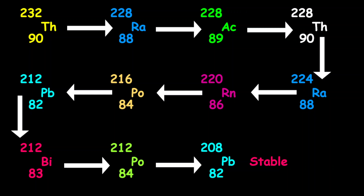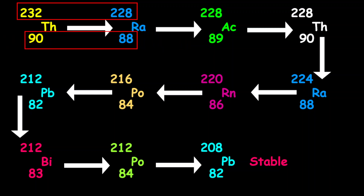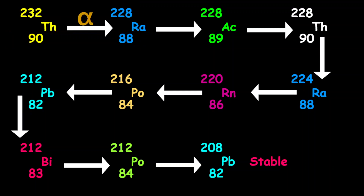The first decay starts with thorium-232, and the first element that is formed is radium-228. The mass number decreased by 4, while the proton number decreased by 2, so therefore this is an alpha decay.